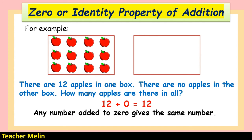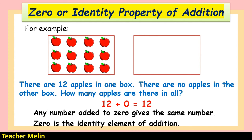Any number added to zero gives the same number. Zero is the identity element of addition. So 12 plus 0 equals 12, and this belongs to the zero or identity property of addition.